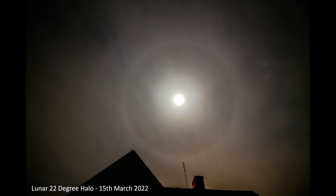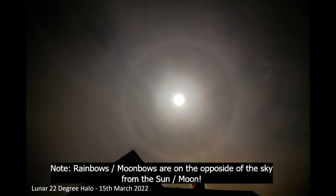Just a little side note: this is not a moon bow. A moon bow is caused by rain — it's the same as a rainbow but caused by moonlight. This is not a moon bow; it's a 22-degree halo. So make sure you don't mix up those terms.